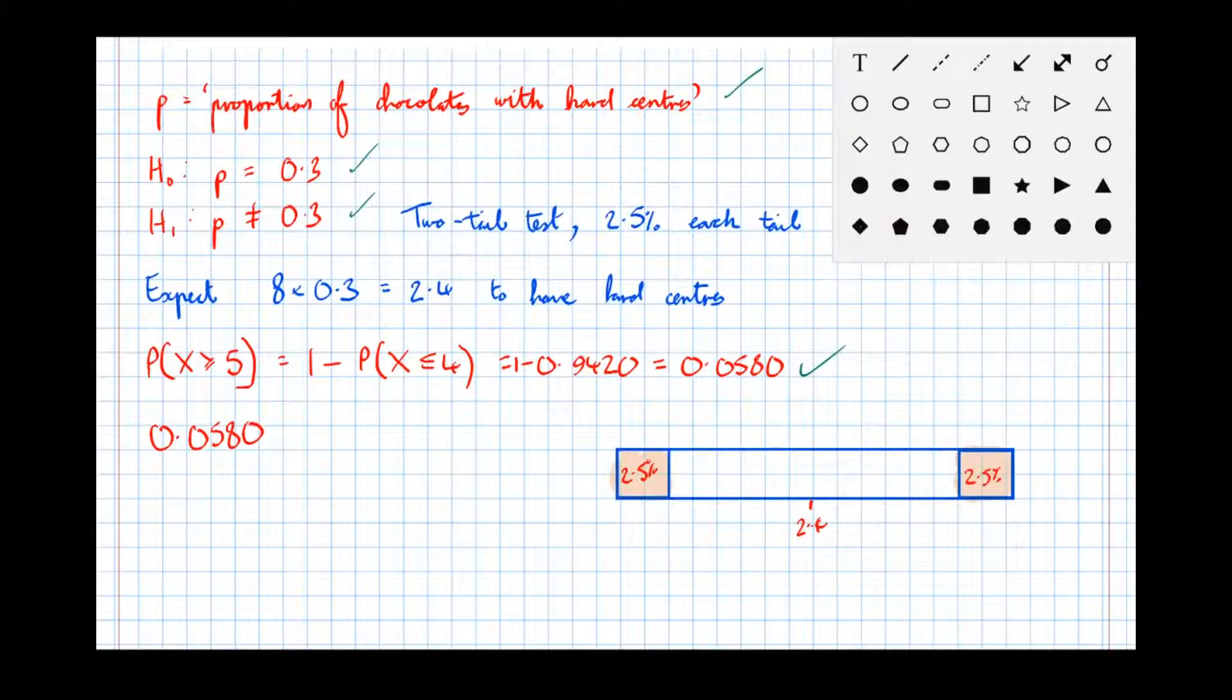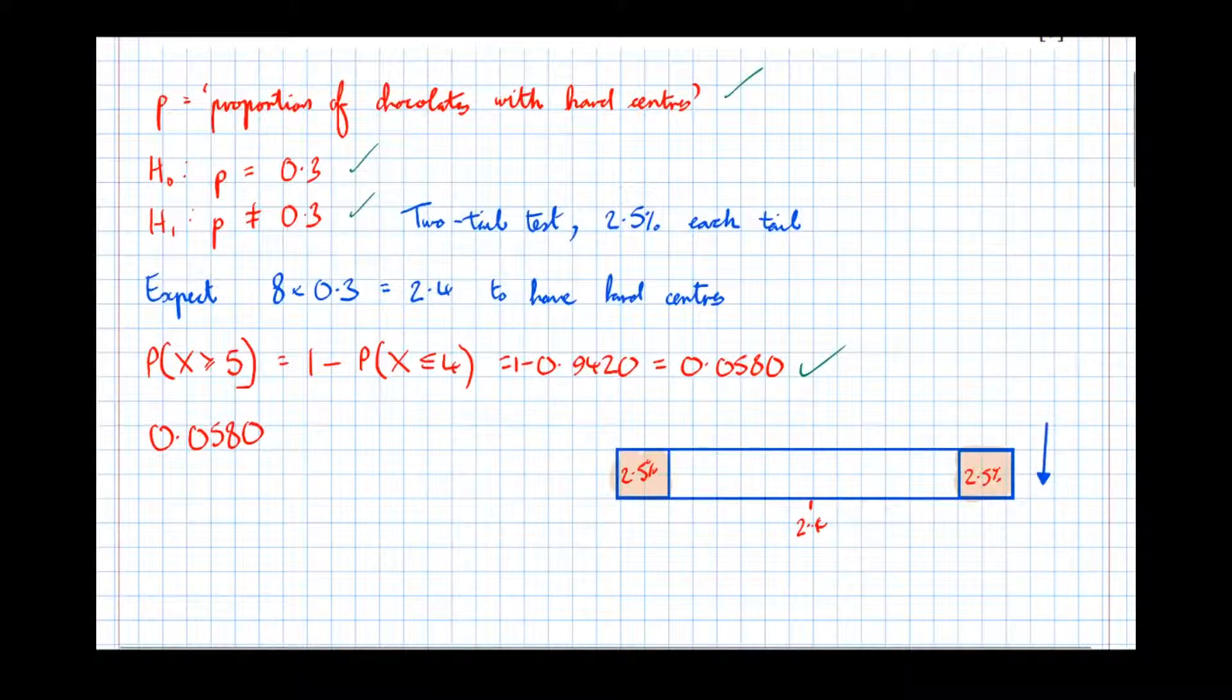And we observed 5, so we need to see whether 5 lies in the rejection region or not. So let's set this up. So there's 5 there, and we're trying to see whether 5 lies in the rejection region. Well, the probability to the right of 5 we've just discovered is 0.0580, i.e., 5.8%. So 5.8% to the right is well outside the rejection region, well outside that 2.5%.